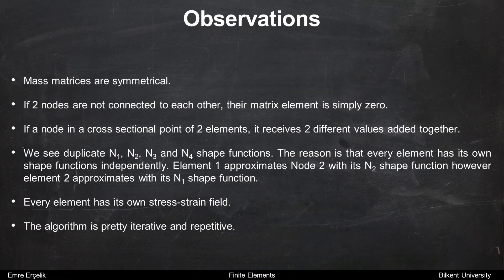We also have observations in two-dimensional examples. Again, mass matrices are symmetrical. If two nodes are not connected to each other, their matrix element is simply zero. If a node is at a cross-sectional point of two elements, it receives two different values added together. We see duplicate N1, N2, N3, and N4 shape functions because every element has its own shape functions independently. Element 1 approximates node 2 with its N2 shape function, whereas element 2 approximates it with its N1 shape function. Every element has its own stress-strain field.